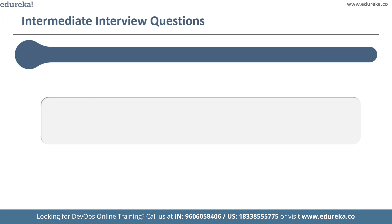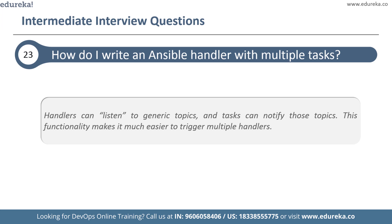The next question is: how do I write an Ansible handler with multiple tasks? For example, a handler that restarts a service only if it is already running. Handlers can listen to generic topics and tasks can notify those topics, making it much easier to trigger multiple handlers. This also decouples handlers from their names, making it easier to share handlers among playbooks and roles.